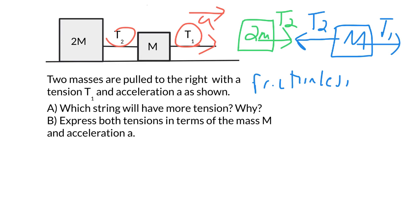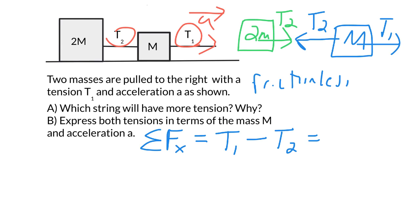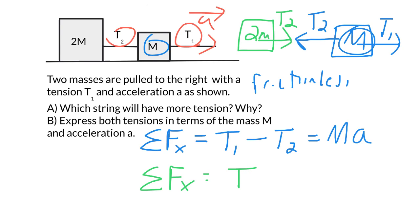The next step is to sum up our forces. I'm going to do the horizontal forces for the first mass. We have T1 going to the right — we'll make that positive — and T2 going to the left — we'll make that negative — and set that equal to MA, using just the single mass M. For the second mass, it's a little easier. We just have one force, T2, and we set that equal to MA. In this case our mass is 2M, so T2 equals 2MA.